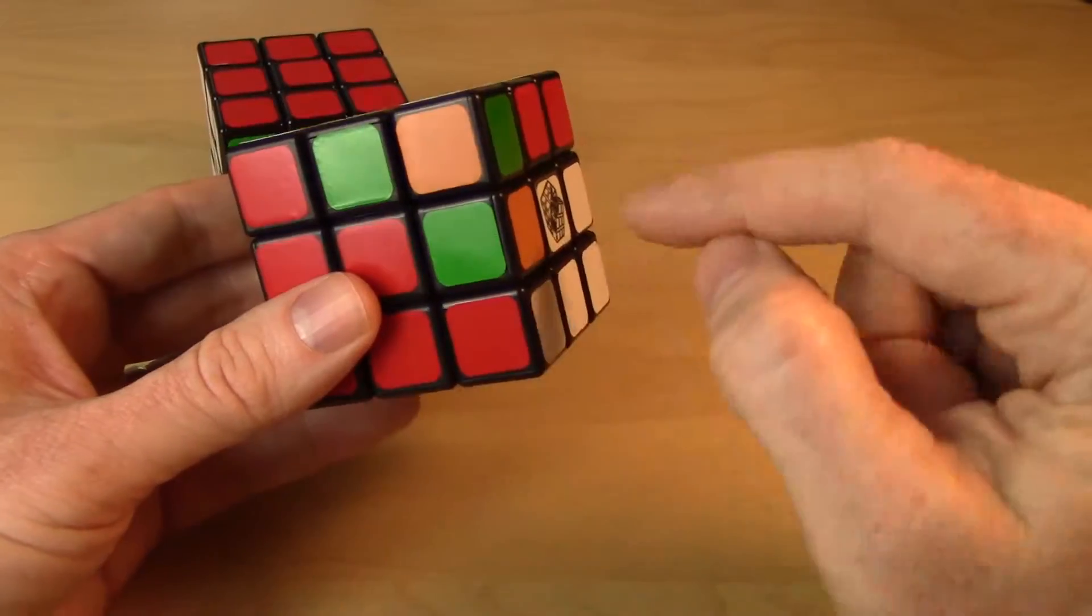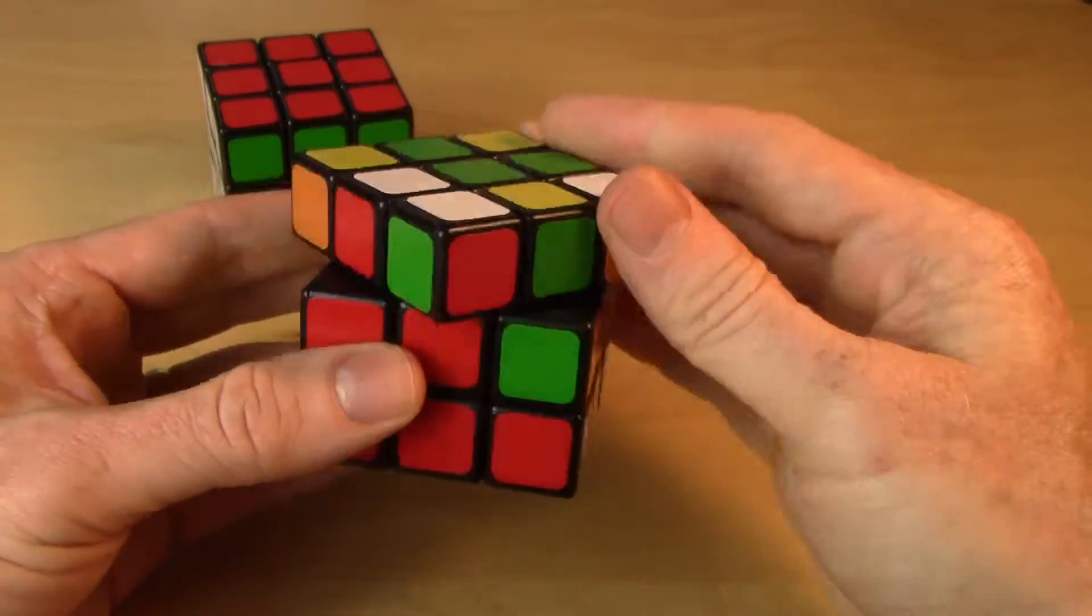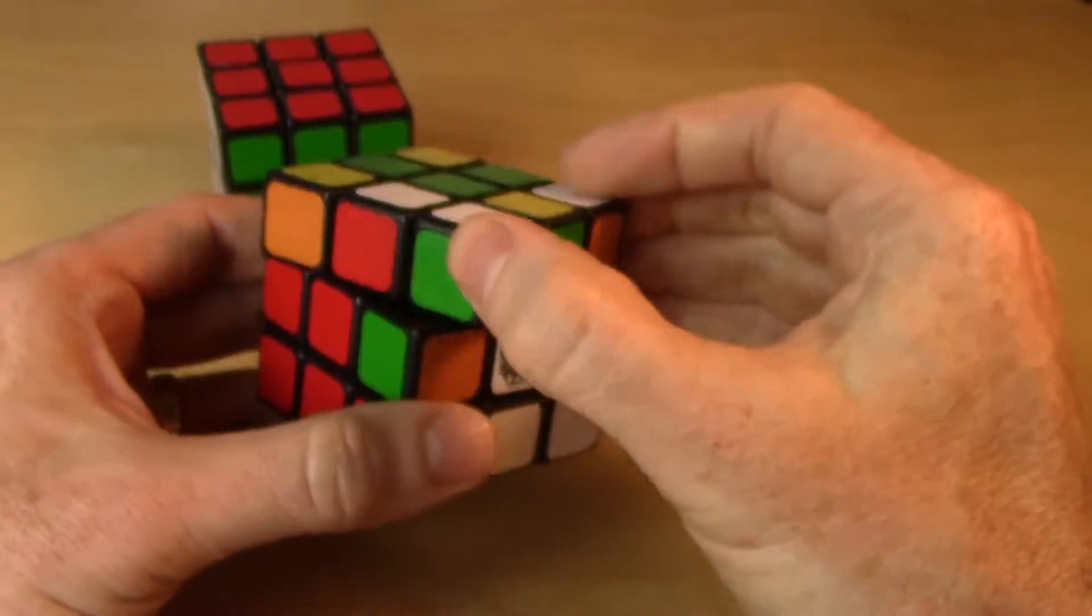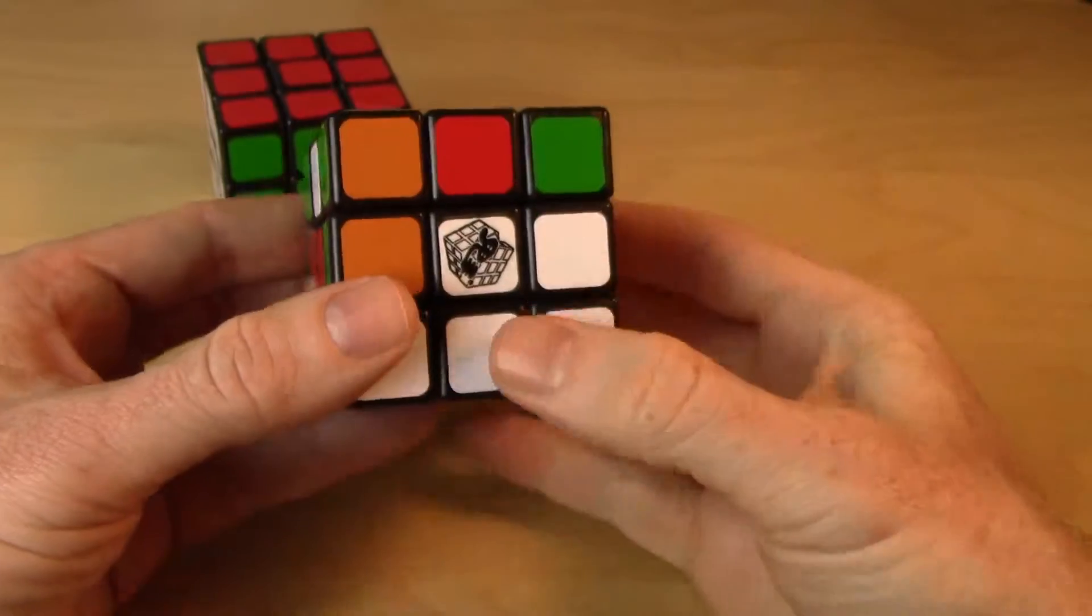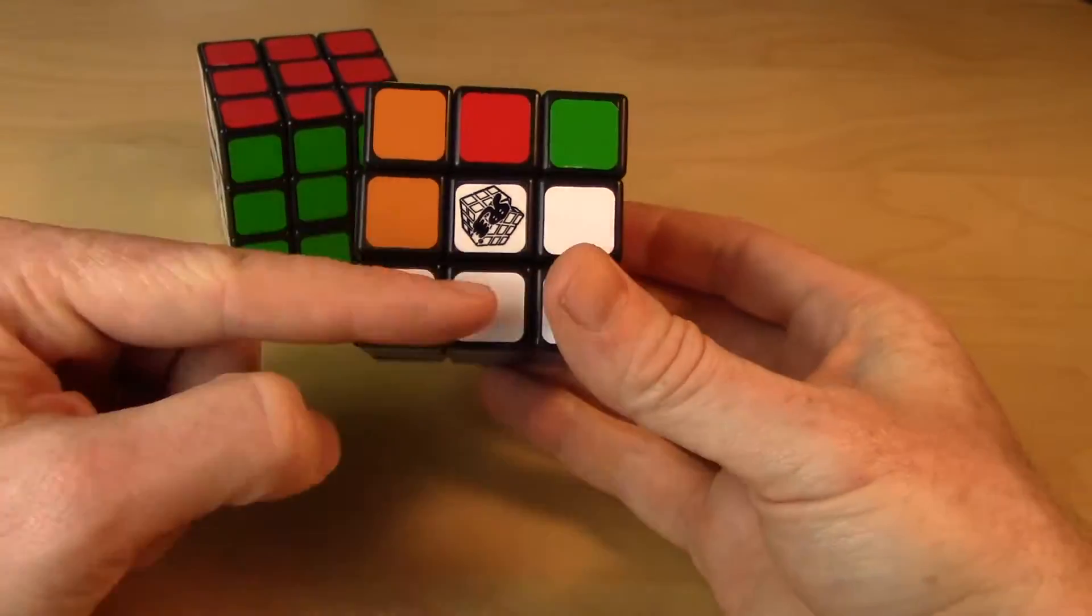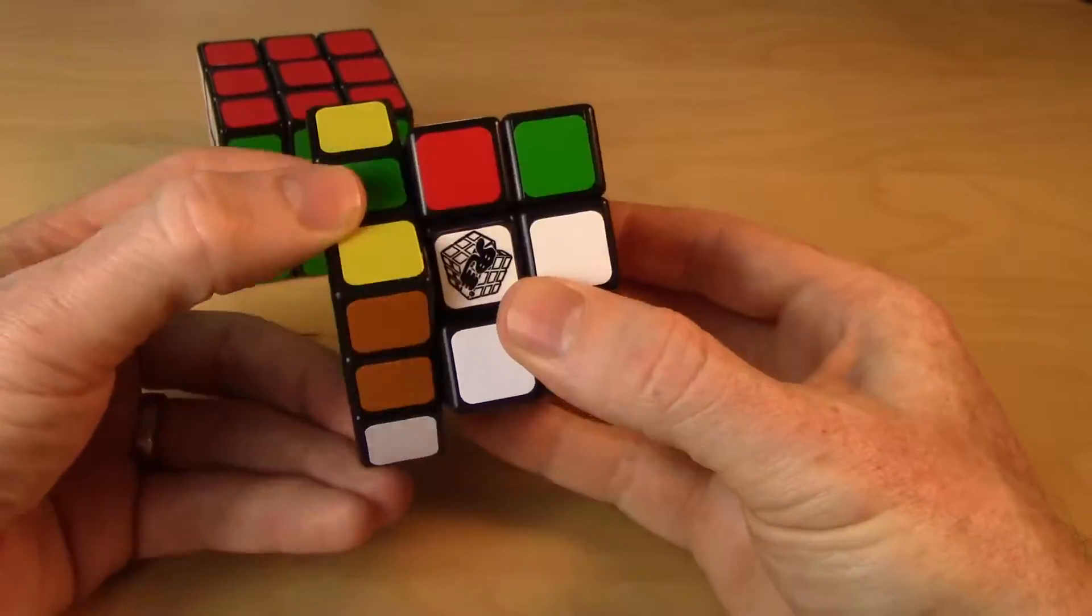And finally, we need to get the white-red piece. There it is here. We line up the top color with the center color. Now I need to send it to the left. How do I send it to the left? Well, I need to bring this piece down there. So I use this side. Bring it downstairs.